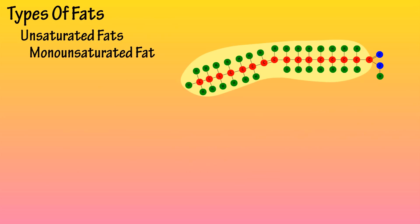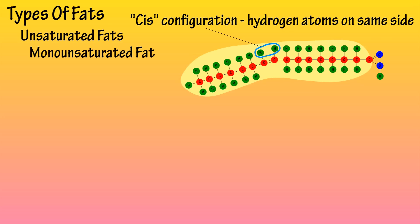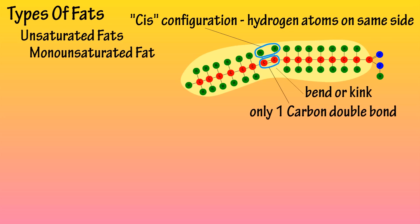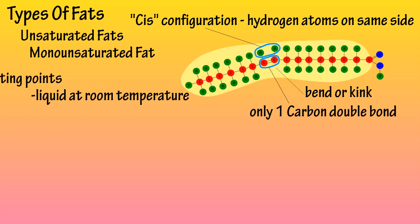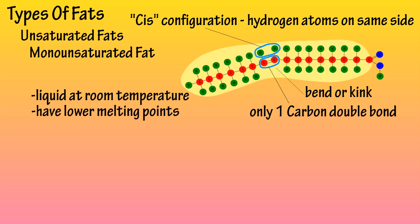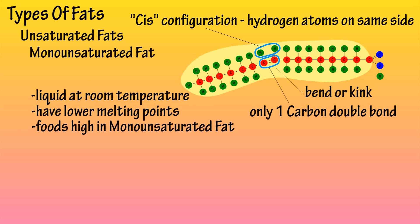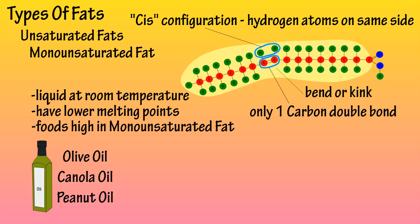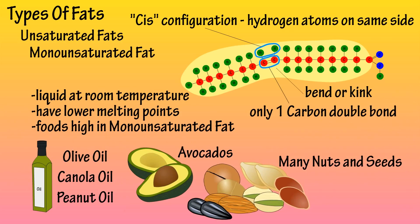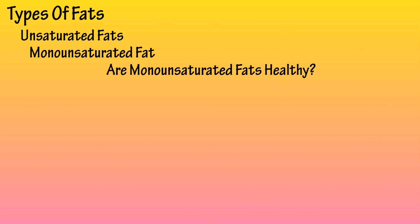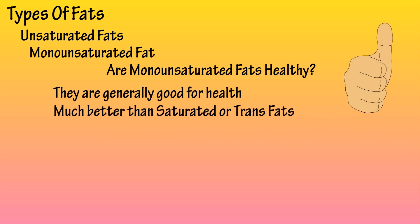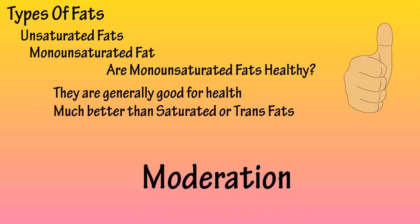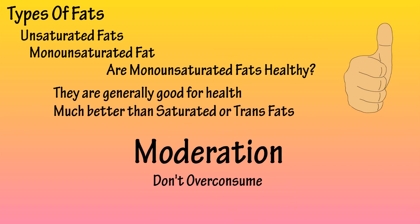The next unsaturated fat is monounsaturated fat. It has a cis molecular formation where the hydrogen atoms are on the same side, giving it a bend or kink-like formation. Monounsaturated fats have only one carbon double bond in their molecule. They are usually liquid at room temperature and have lower melting points than saturated and trans fats. Foods that are high in monounsaturated fat include many plant-based oils such as olive oil, canola oil, and peanut oil, as well as avocados and many types of nuts and seeds. Monounsaturated fats are generally thought of as being good for health, especially when chosen over saturated or trans fats, but it's always about moderation — any fat can be unhealthy when consumed in unreasonably high quantities.